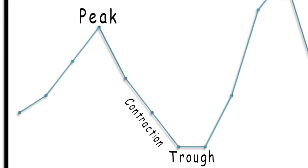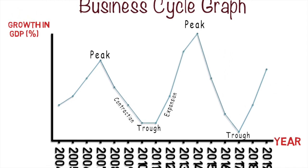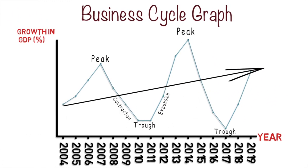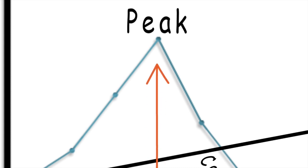Moving from a peak down to a trough, we see a contractionary period — when output begins to fall, maybe due to a contraction in consumption expenditure, investments, or inventories going too high. Moving from a trough to a peak, we have an expanding economy with more spending, more investment, and more government spending. If we connect all these points with a trend line, it shows the average output growth in the economy over time.